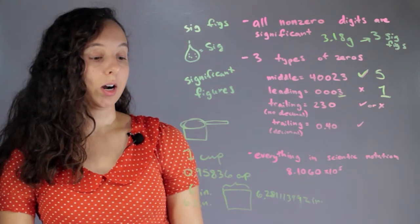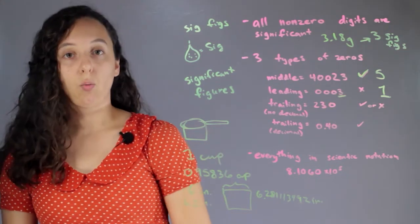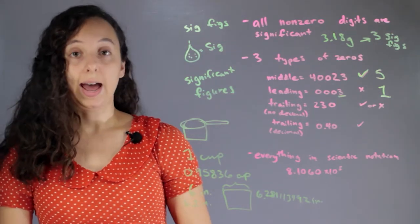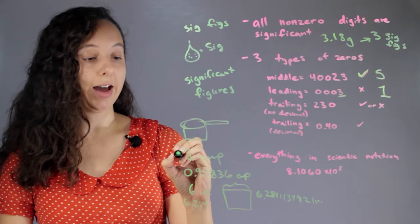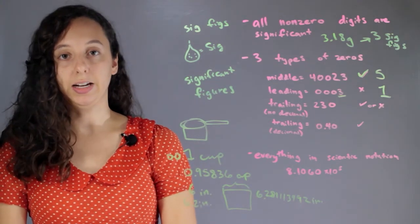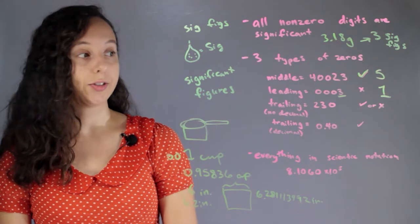And so imagine back to our cup example. Let's say I had 1 cup of flour and I wanted to add sig figs. I couldn't just say I have 0, 0, 1 cups of flour, right? That doesn't make it any more or less accurate. So it's just 1 sig fig.